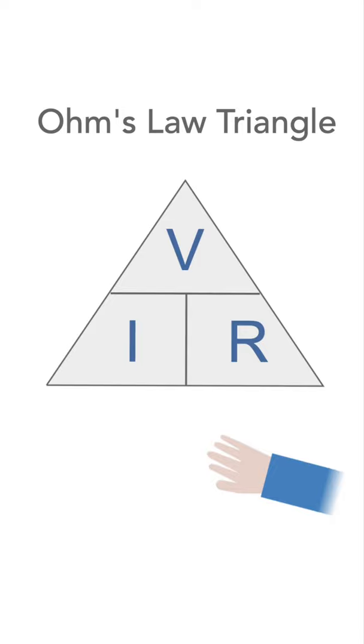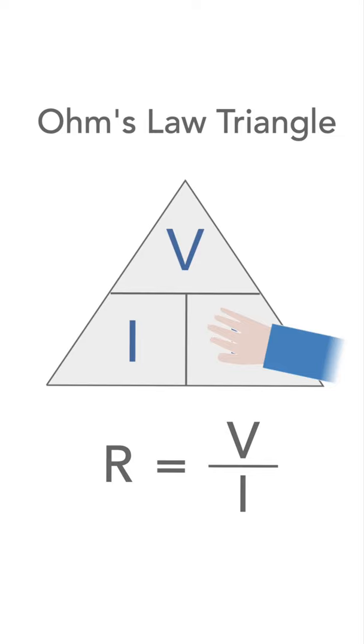Similarly for R, V is on the top and I is underneath, so R is V divided by I.